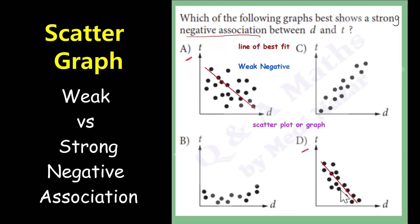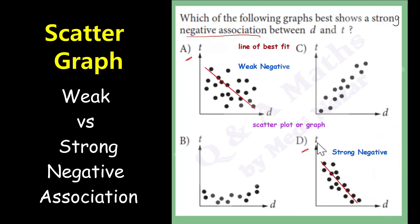While in letter D, the data points are close to the line of best fit, and it shows a strong negative association between D and T. So the answer is letter D.